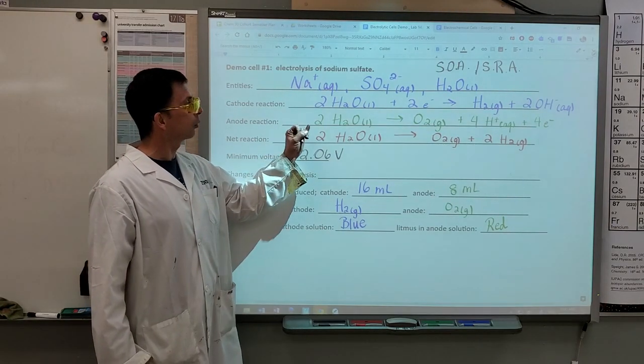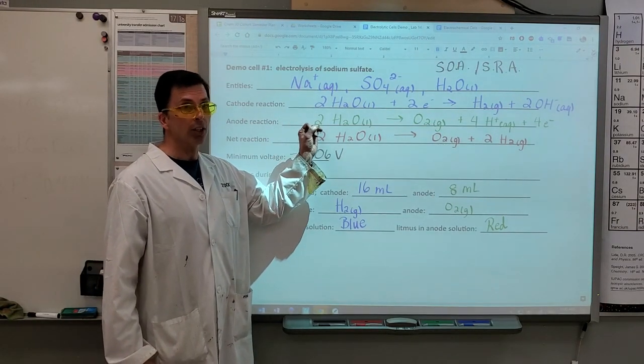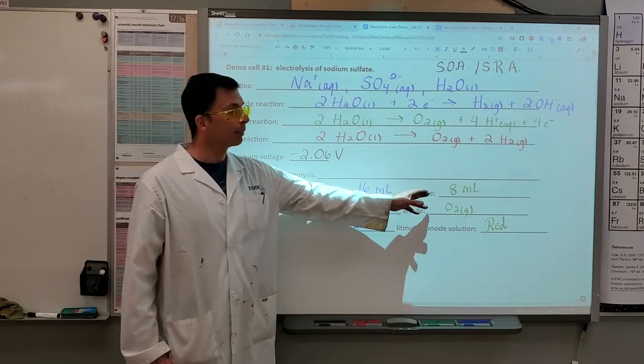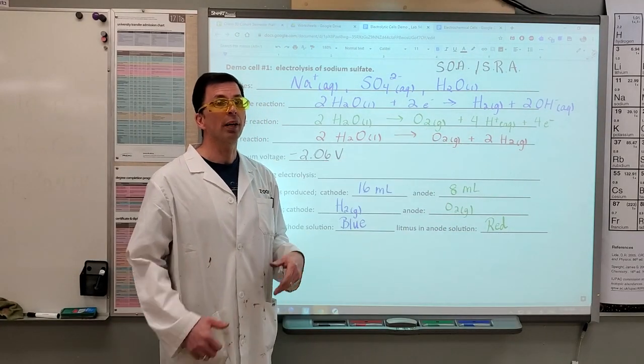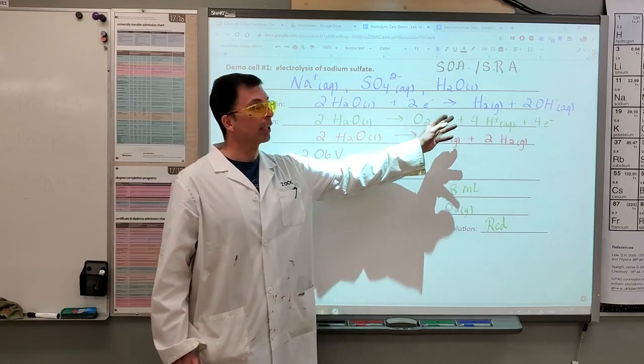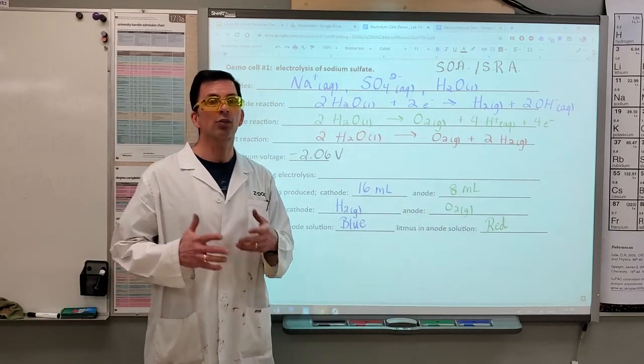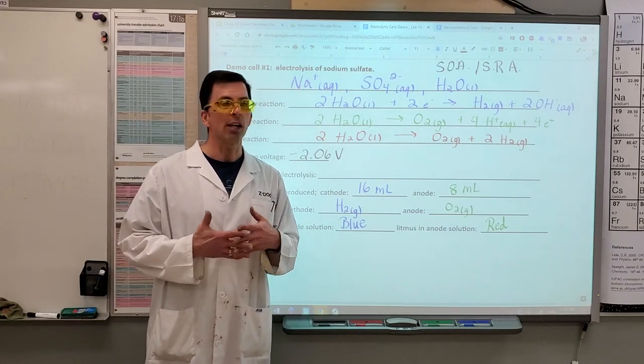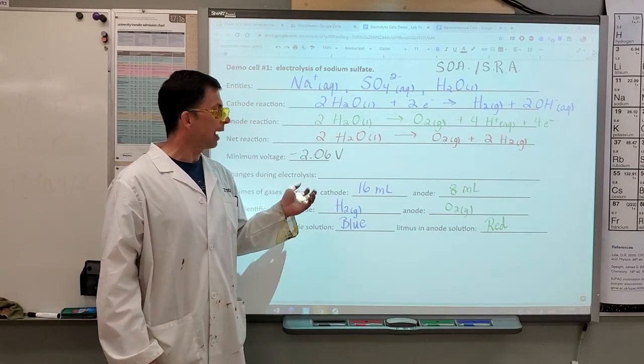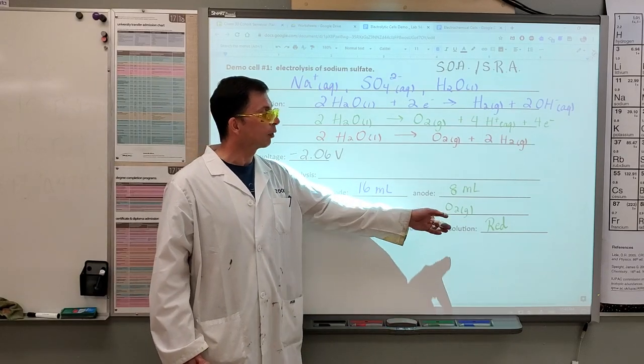At the anode, that featured the oxidation of water producing 8 milliliters of oxygen gas. Oxygen gas, again verified by the glowing splint test. Production of hydrogen ions, also verified by the clear color of the bromothymol blue indicator. As well as the litmus turning red.